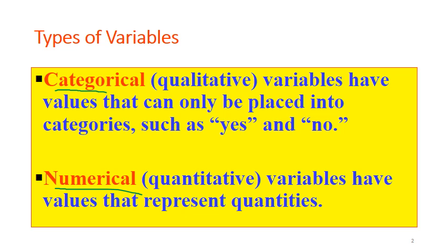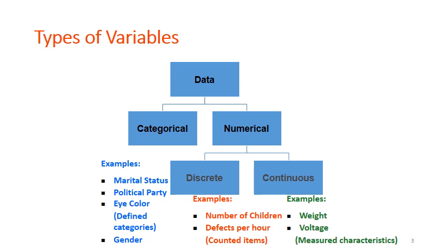Two types of main data here that represent quantities. If you look at this hierarchy thing, data is actually categorized into categorical and numerical. Under categorical, you have examples like marital status, political party, eye color, gender. Basically, they are categories. And numerical can be broken down into two: one is called discrete, and the other one is called continuous.